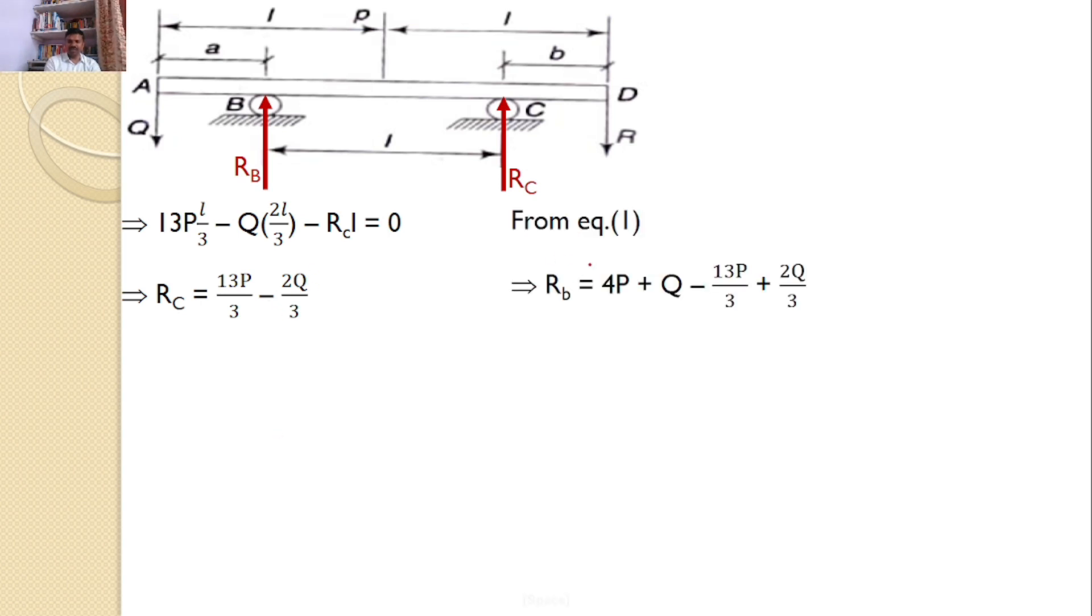From equation 1, RB equals 4P plus Q minus RC. Substituting RC equals 13P by 3 minus 2Q by 3 and simplifying, you get RB equals 5Q by 3 minus P by 3.